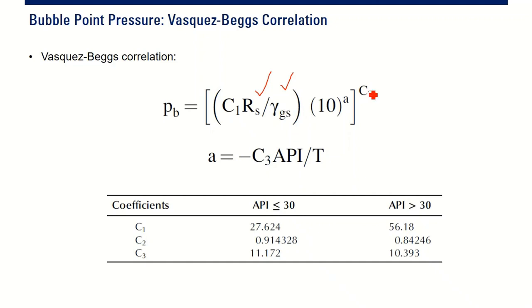But you have C1, C2, and C3 with two classes: below 30 API and greater than 30.